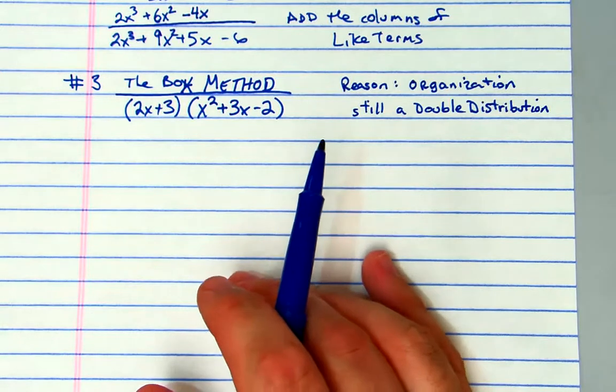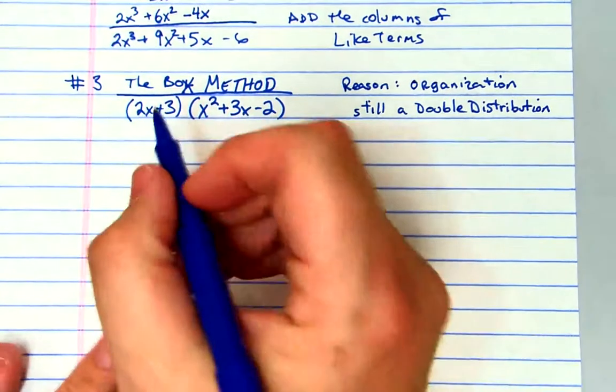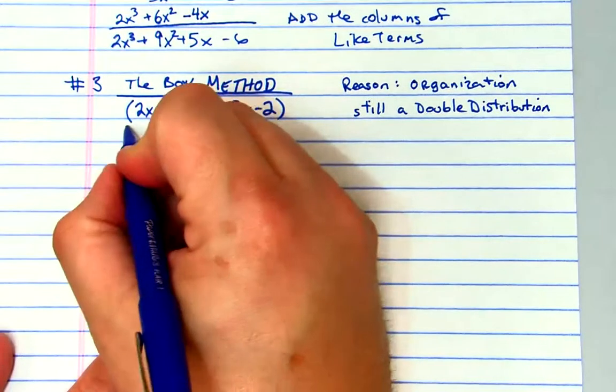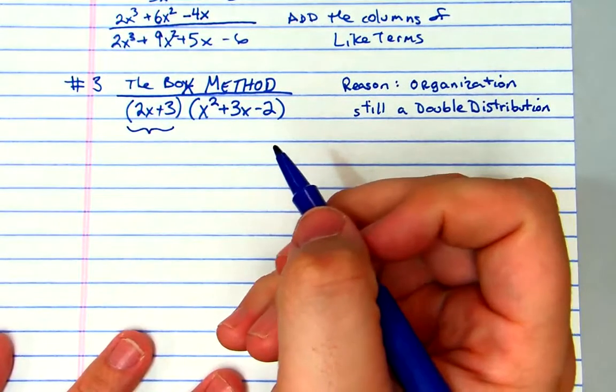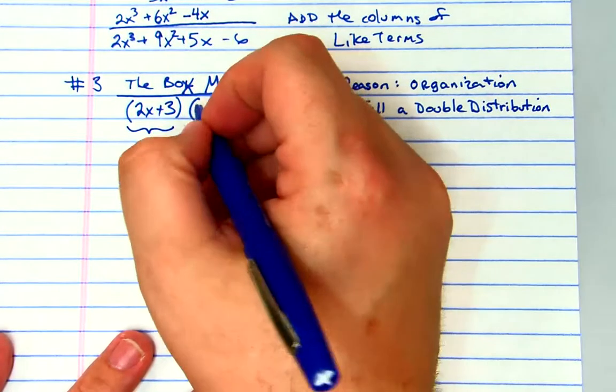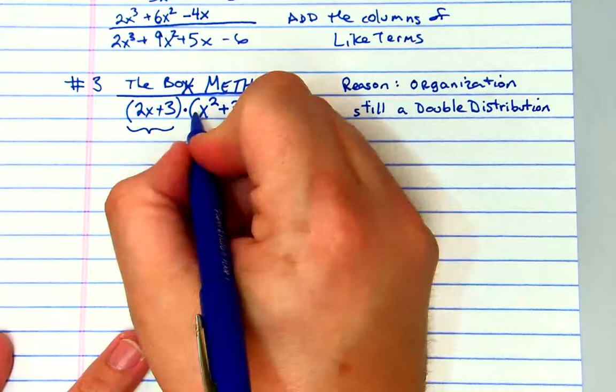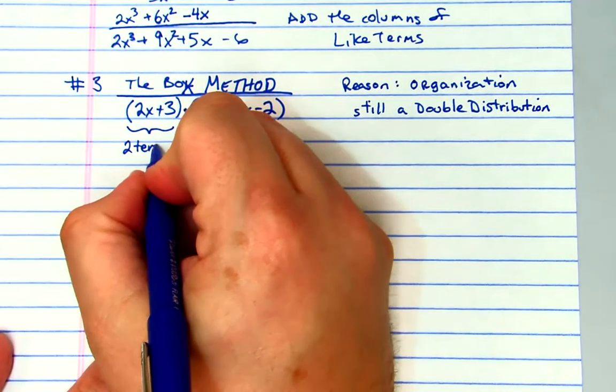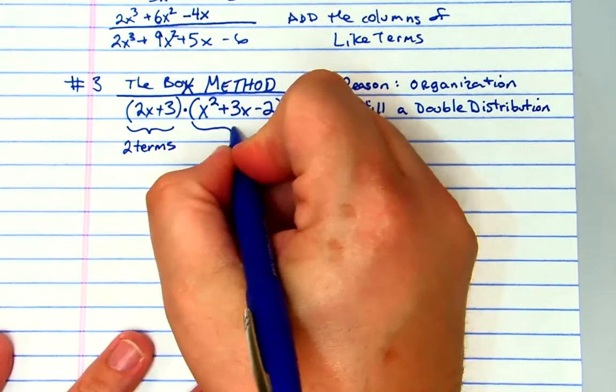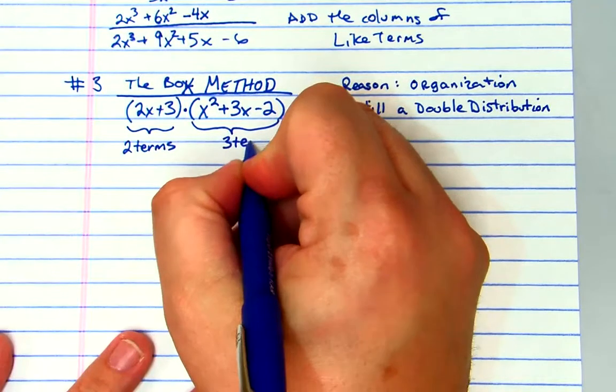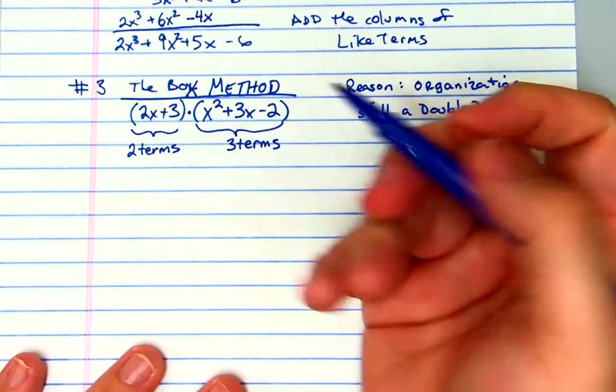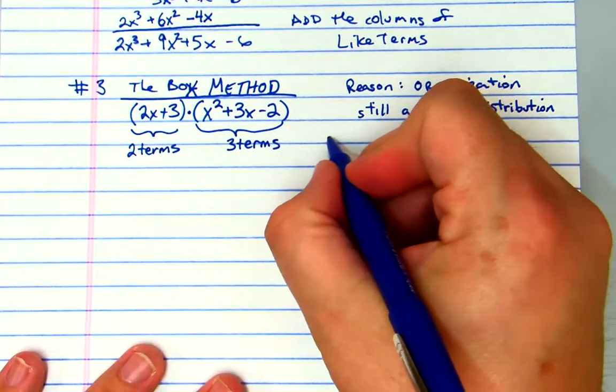Here's how you set it up, and once you get used to the setup it's very easy. You take a look at the first factor because we have two factors here - factor times factor equals a product. There are two terms here, there are three terms here. When you set it up, you'll just say two and three.